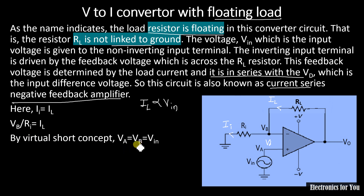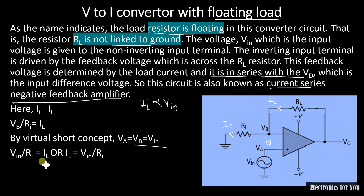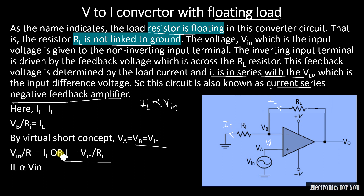We will put VB equals VIN in the equation. So our equation becomes VIN upon RI equals IL, or IL equals VIN upon RI. Here RI is constant, therefore IL is directly proportional to VIN, and hence our equation is proved.